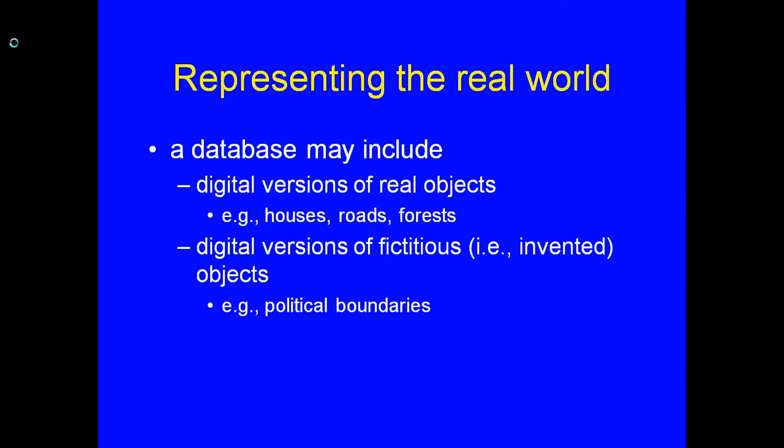A GIS database can contain representations of real objects such as houses, roads, etc., and digital representations of fictitious or invented or artificial items such as political boundaries which don't really exist in nature. However, they are an important part of datasets and analysis in many cases.